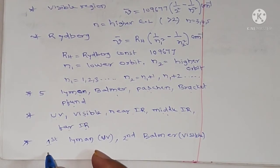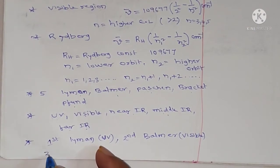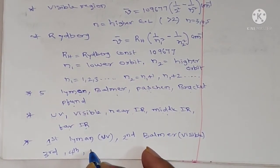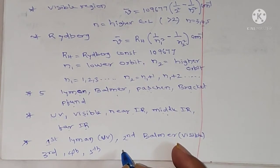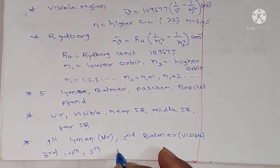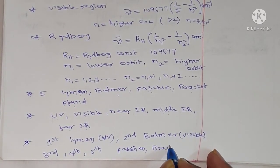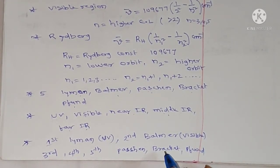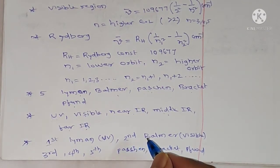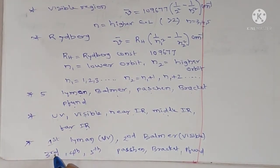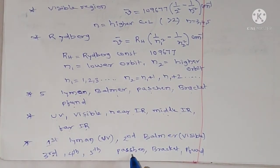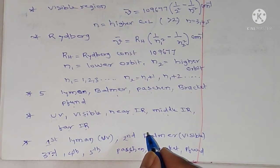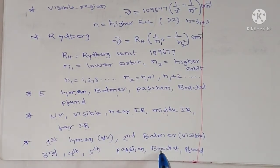Similarly, when excited electrons come back to the third energy level from any higher energy level, Paschen series is formed. When they come back to the fourth energy level, Brackett series is formed. When excited electrons come back to the lower third energy level, Paschen series will form. If excited electrons come back to the lower fourth energy level, then Brackett series will form.